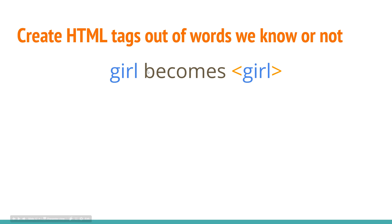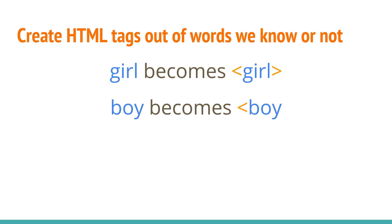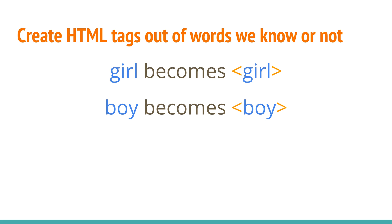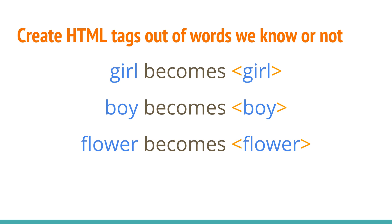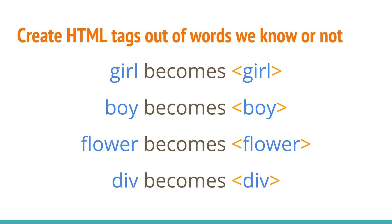There's a friend next to us, Viorica, and I've asked her to pick a random word. She picked 'boy', so boy becomes lesser sign, boy, and greater sign — another HTML tag. More examples: flower becomes lesser sign, flower, greater sign. Div becomes lesser sign, div, greater sign. It literally can be any word you can think of.